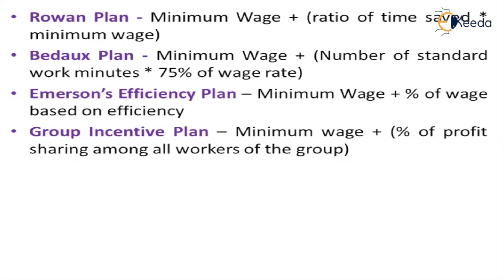In Bedaux's plan, the incentive is calculated as the number of standard working minutes multiplied by 75% of the wage, so it calculates working minutes at 75% of the minimum wage as the incentive. In Emerson's efficiency plan, the percentage of wage based on efficiency is added as the incentive with the minimum wage. In the group incentive wage plan, individual performance is not the measuring criteria — as a group they work, and whatever profit is obtained, a percentage is divided among the group members as incentive along with their minimum wage. All these plans indicate what percentage of incentive can be given to a worker along with their minimum wage.